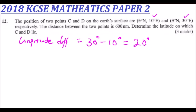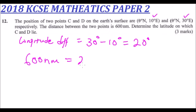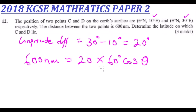Because we have been given the distance in nautical miles, we say 600 nautical miles is equal to the longitude difference, which is 20 multiplied by 60, times the cosine of theta.